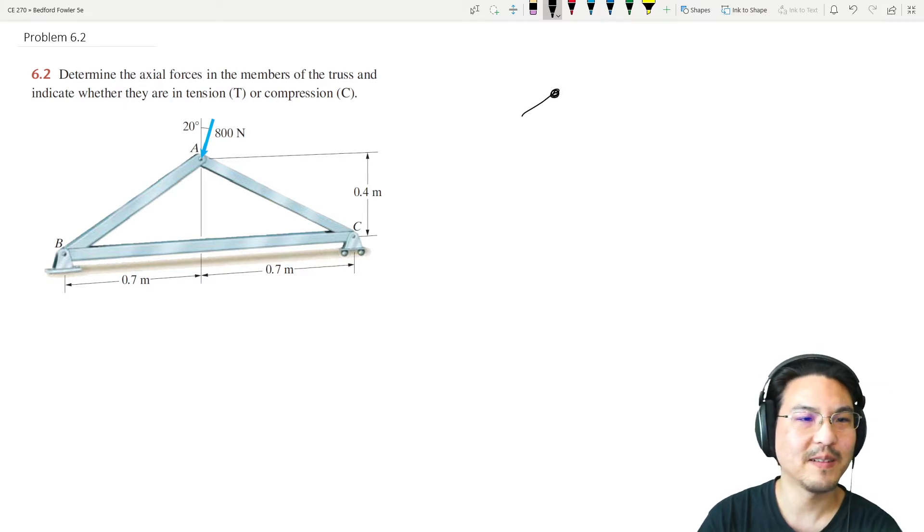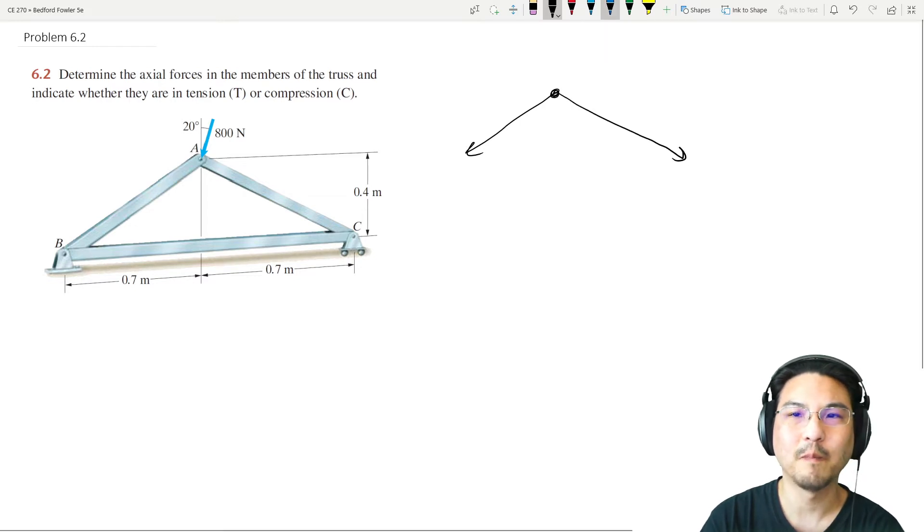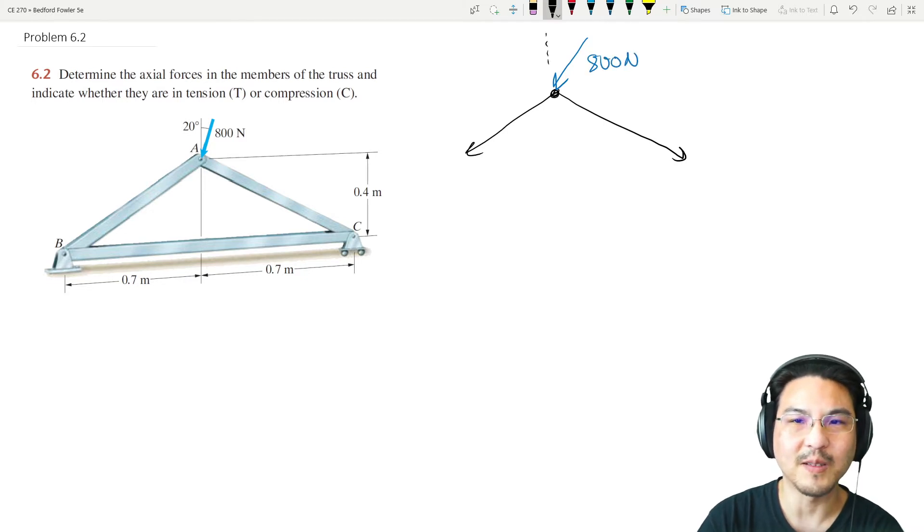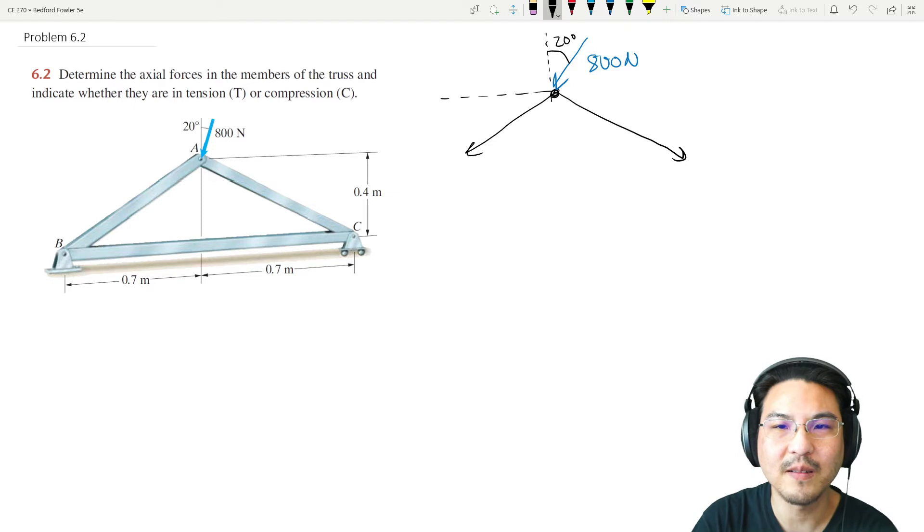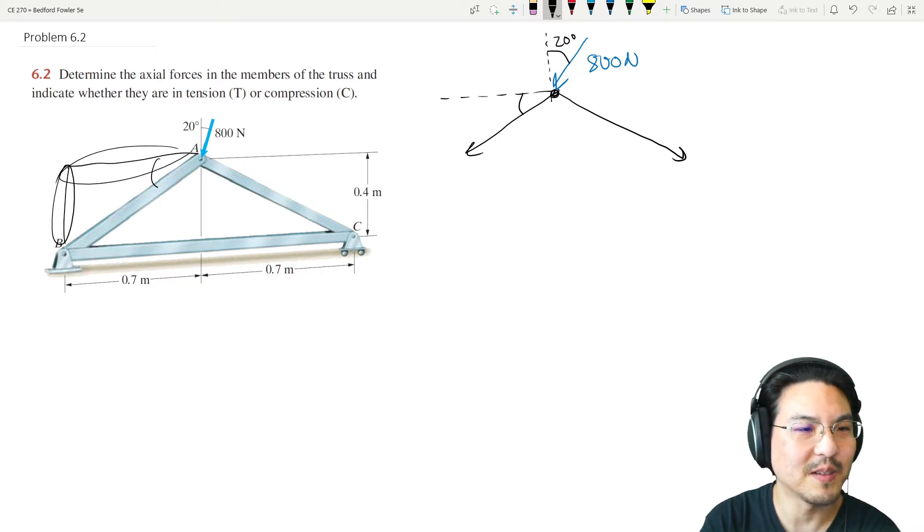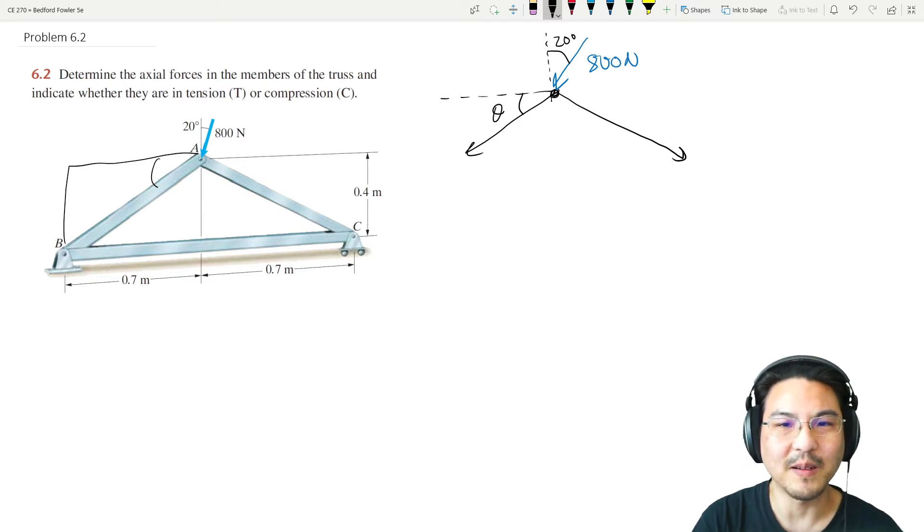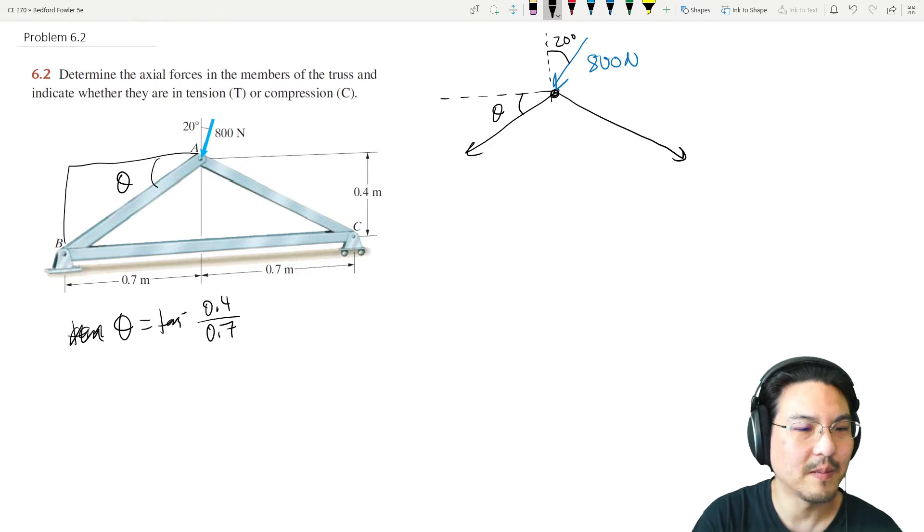The free body diagram looks like this: beam, this beam, and then some load here. Now let's get the geometry in here. This is 20 degrees. This here is the triangle, so this angle would be arctan of opposite over adjacent. I'll call it theta. Theta tangent is opposite over adjacent, so if you want the angle just take arctan.